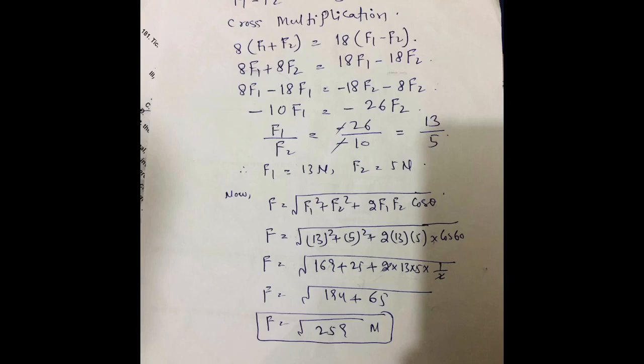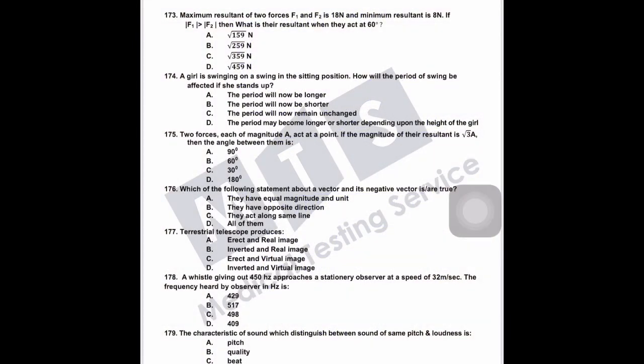Question 174: a girl swinging on a swing in sitting position stands up. How will the period be affected? The length of a pendulum is the distance between the suspension point and center of gravity. When she stands up, her center of gravity rises, so the distance from the suspension point decreases. With decreased length, the period will now be shorter.